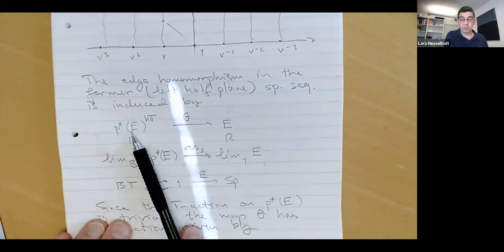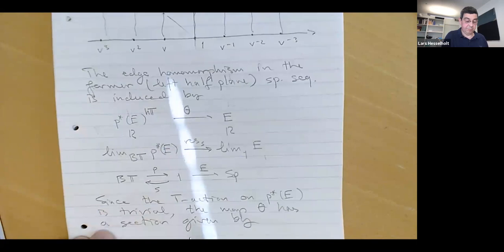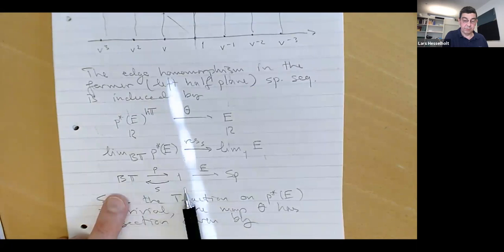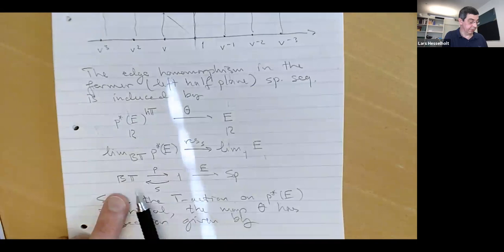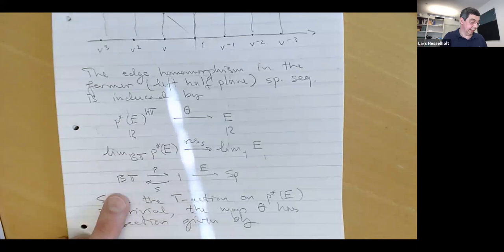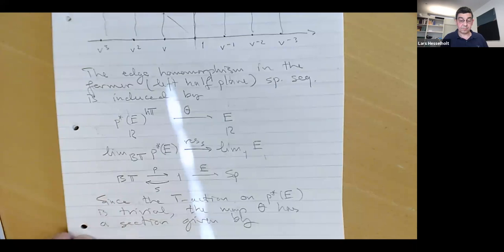The edge homomorphism is the forgetful map, the inclusion of the fixed points into everything. We have the classifying space of the circle, a point, and spectra. I choose some point in the classifying space of the circle — a section s of the canonical projection — and restricting along that gives a map that induces the edge homomorphism in the spectral sequence.